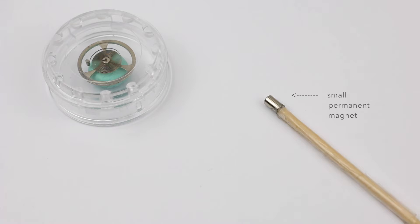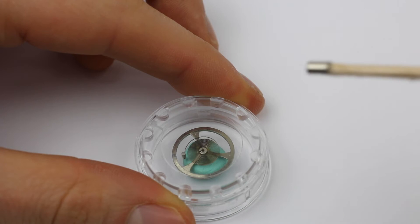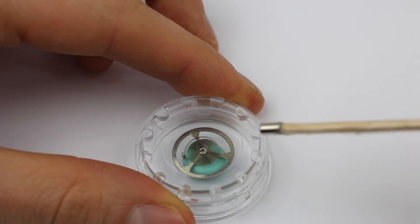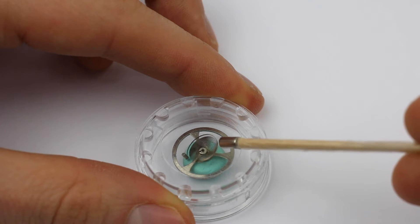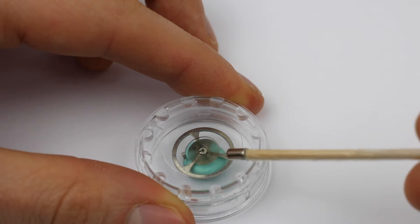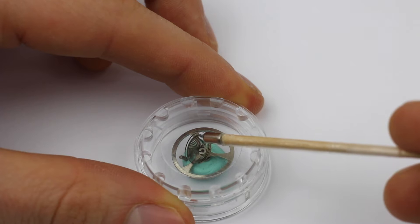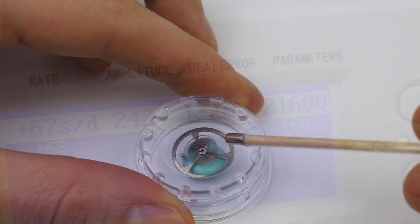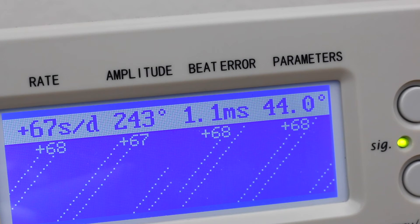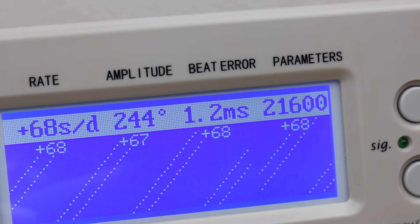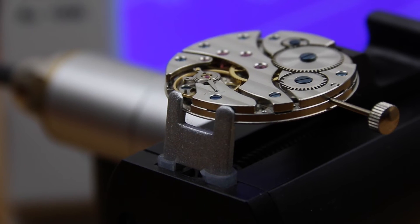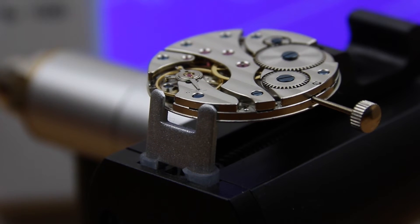And what magnets do is they magnetize that hairspring and these little tiny windings of the hairspring start to stick together. And effectively that shortens the active length of the hairspring making it run very, very fast. Luckily, in most cases this is something that can be reversed by just demagnetizing a watch. So if you encounter a mechanical watch that is suddenly from one moment to another running very fast, you can pretty much be sure that it has been magnetized. And you should stop wearing it and stop winding it immediately and get it demagnetized.